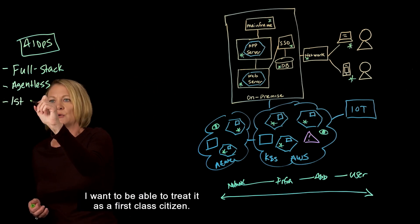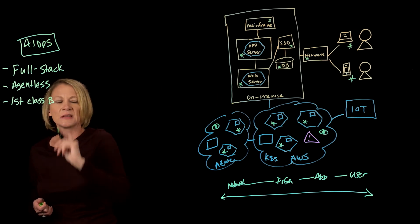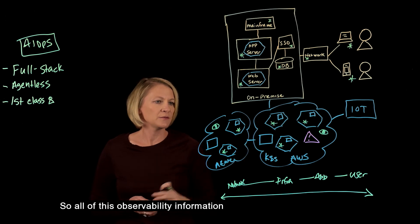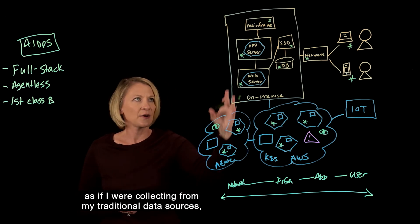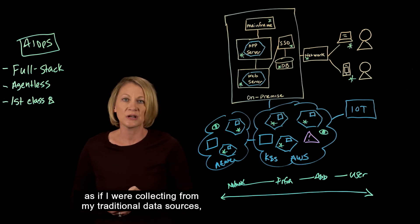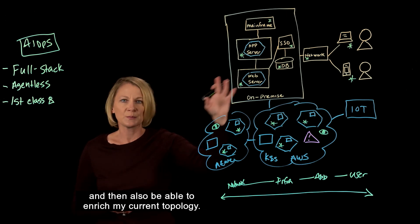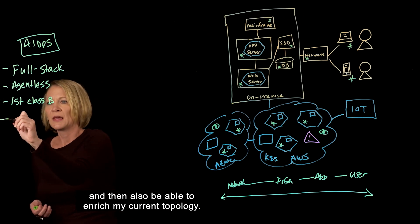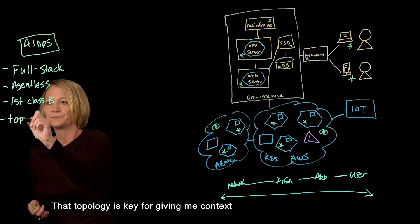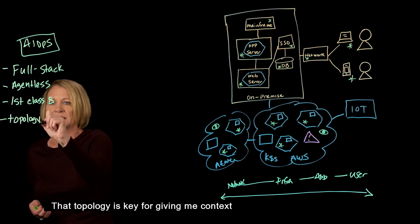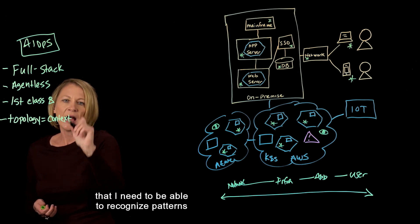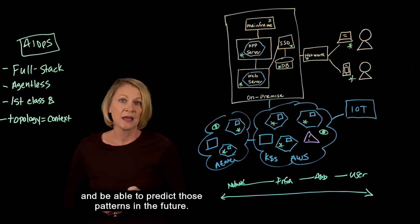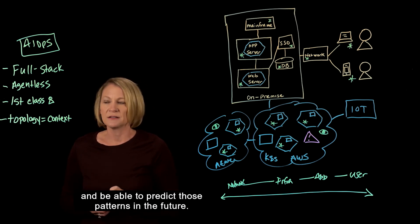I want to treat it as a first-class citizen, so all of this observability information needs to be consumed as part of another dataset as if I were collecting from my traditional data sources, and then also be able to enrich my current topology. That topology is key for giving me context that I need to recognize patterns and be able to predict those patterns in the future.